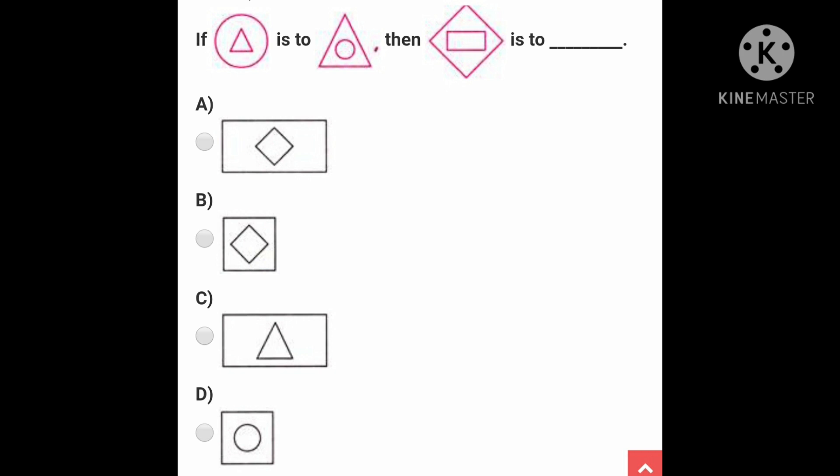If circle is to triangle inside it, and triangle is to circle, then this given figure is to which figure? See the options very nicely and identify it.